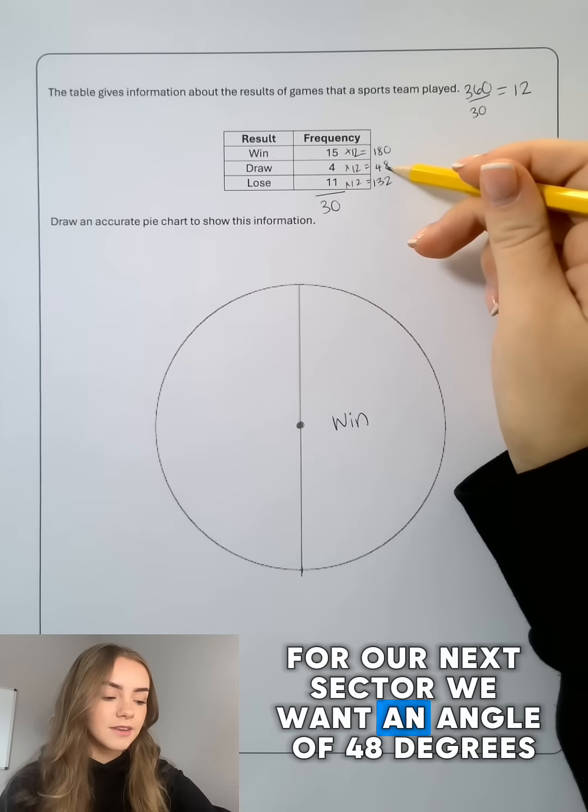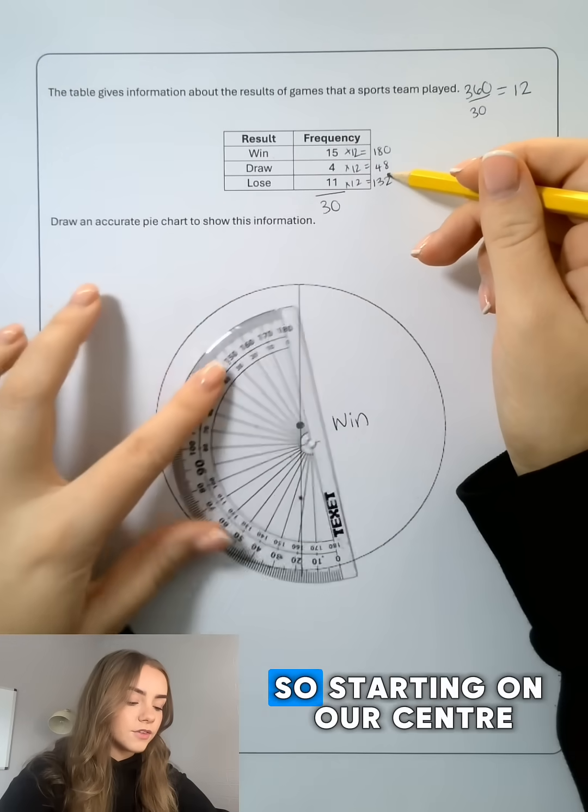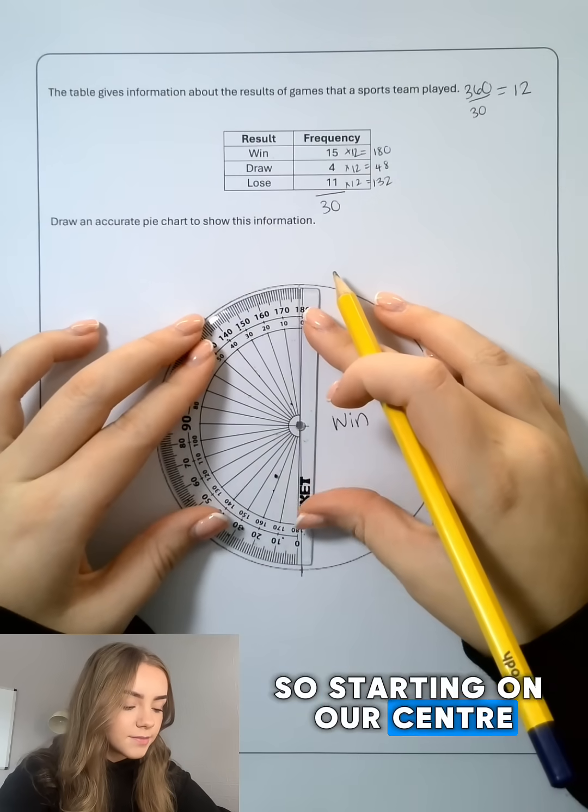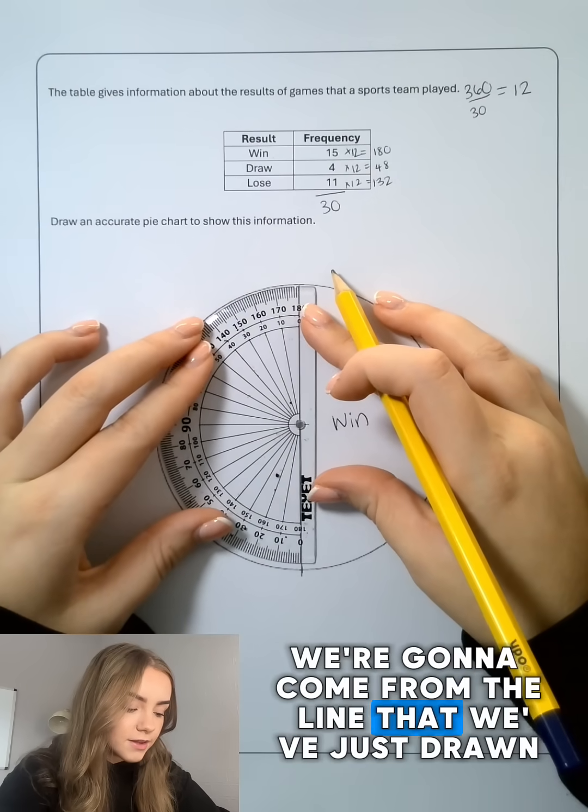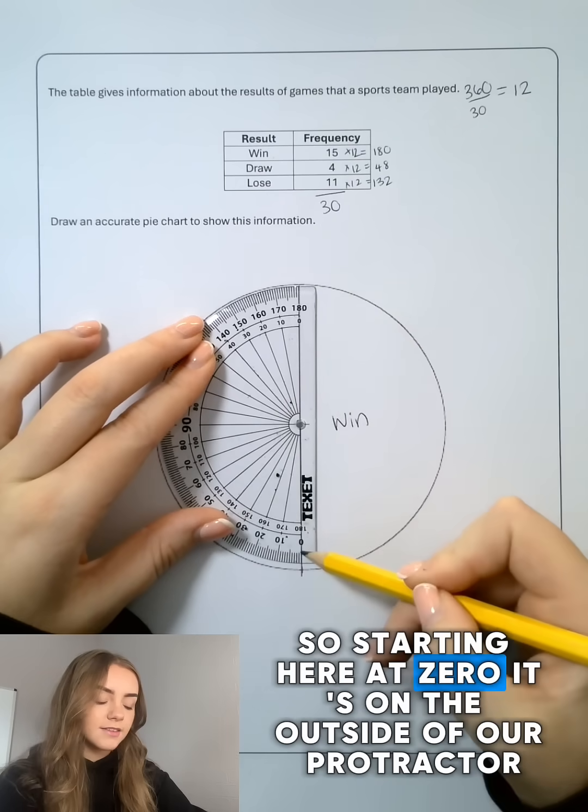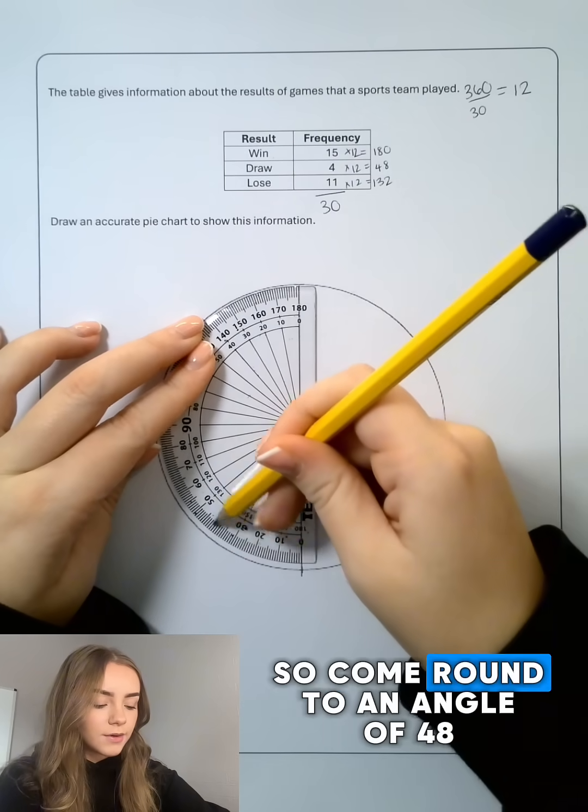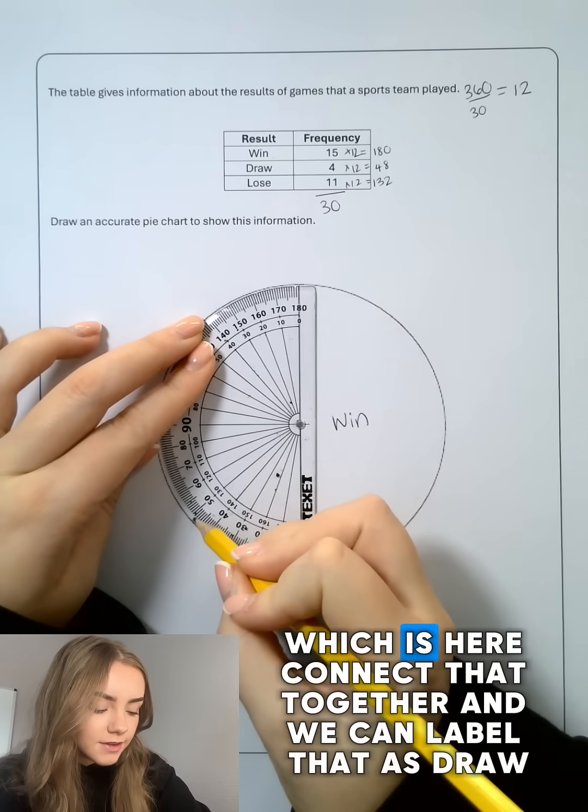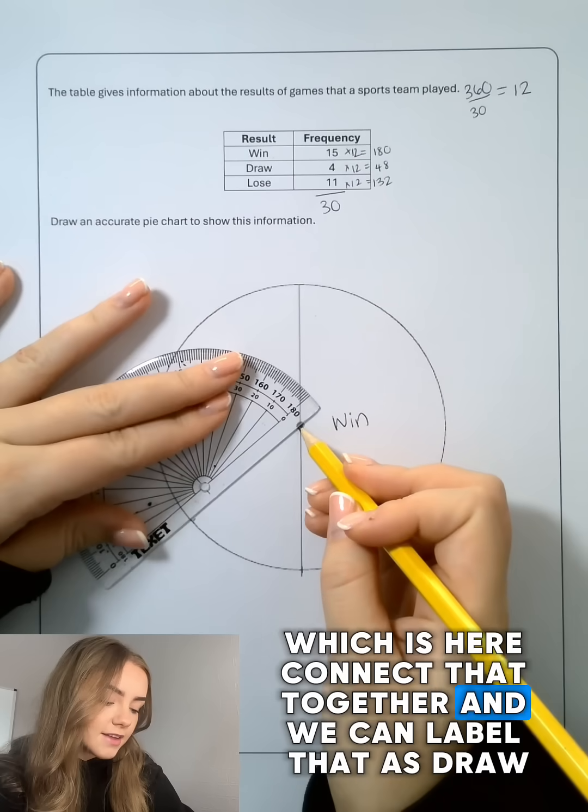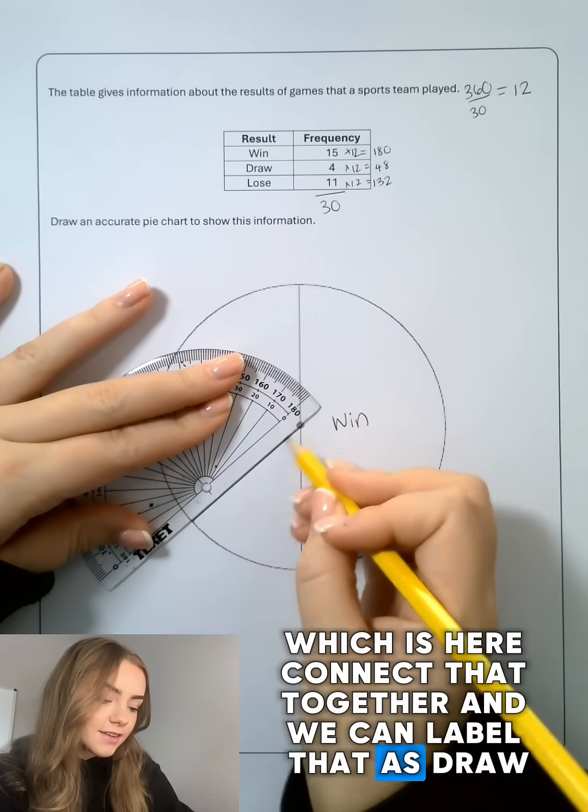For our next sector we want an angle of 48 degrees. So starting on our center, we're going to come from the line that we've just drawn. Starting here at zero, it's on the outside of our protractor. So we'll come round to an angle of 48 which is here. Connect that together and we can label that as draw.